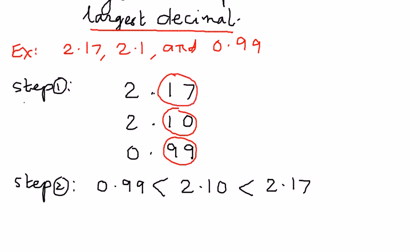We are comparing these numbers, 0.99 and 1.0 and 1.7. So 99 cents in the, before the decimal place, the digit is 0. But looking at these numbers, 0.99 is less than 2.1 and 10 is less than 17.